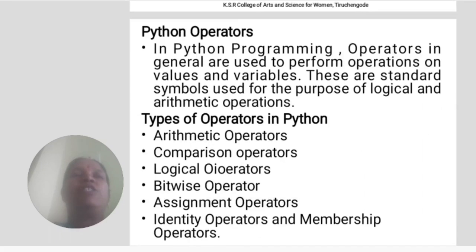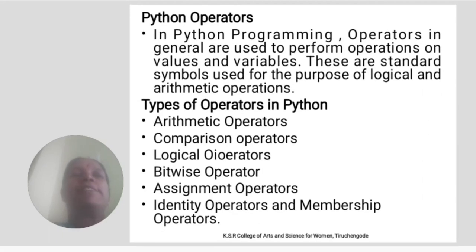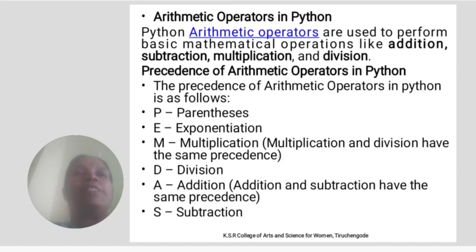Python operators. In Python programming, operators in general are used to perform operations on values and variables. These are standard symbols used for the purpose of logical and arithmetic operations. Types of operators in Python: arithmetic operators, comparison operators, logical operators, bitwise operators, assignment operators, identity operators, and membership operators.